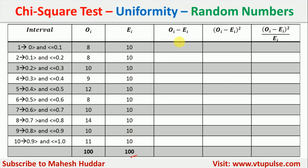Now we calculate the difference OI minus EI for every interval: 8 − 10 = −2, 8 − 10 = −2, 10 − 10 = 0, and 11 − 10 = 1, and so on for all intervals. Then we square these differences: (−2)² = 4, (−2)² = 4, 0² = 0, (−1)² = 1, 2² = 4, and so forth for all intervals.